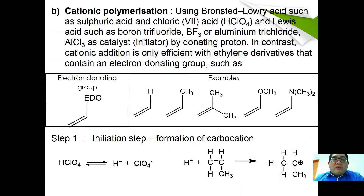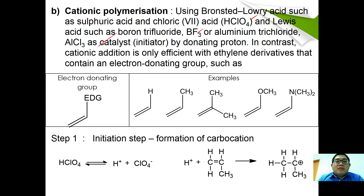Cationic polymerization makes use of Brønsted-Lowry acids such as sulfuric acid and hydrochloric acid, or Lewis acids such as boron trifluoride or aluminum trifluoride, as catalyst or initiator by donating a proton. Cationic addition is only efficient with ethylene derivatives that contain an electron-donating group.